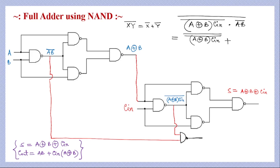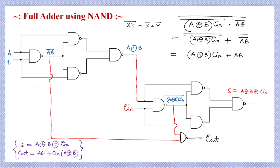Applying De Morgan's law and simplifying, the two complement bars cancel each other. We get (A XOR B)·C_in from one part, and from the other part the two bars cancel, leaving A·B. This gives us the expression A·B + C_in·(A XOR B), which is exactly C_out, the carry output of the full adder. Therefore, the output of this final NAND gate is nothing but C_out, the carry output of the full adder circuit.